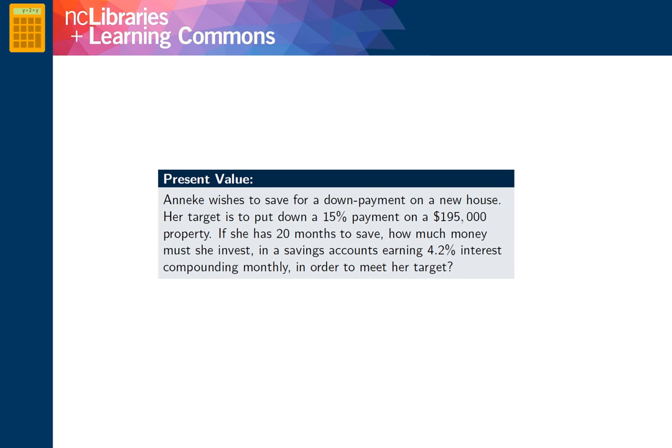Monica wishes to save for a down payment on a new house. Her target is to put down a 15% payment on a $195,000 property. If she has 20 months to save, how much money must she invest in a savings account earning 4.2% interest compounding monthly in order to meet her target?